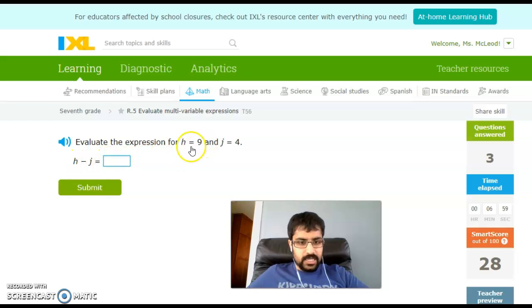All right, h minus j. h equals 9, j equals 4, so 9 minus 4 is 5. Easy peasy. Squeezy. m equals 4, n equals 2, so I've got a 4, I've got a 2, and I can take 4 minus 2, and I'm left with 2.